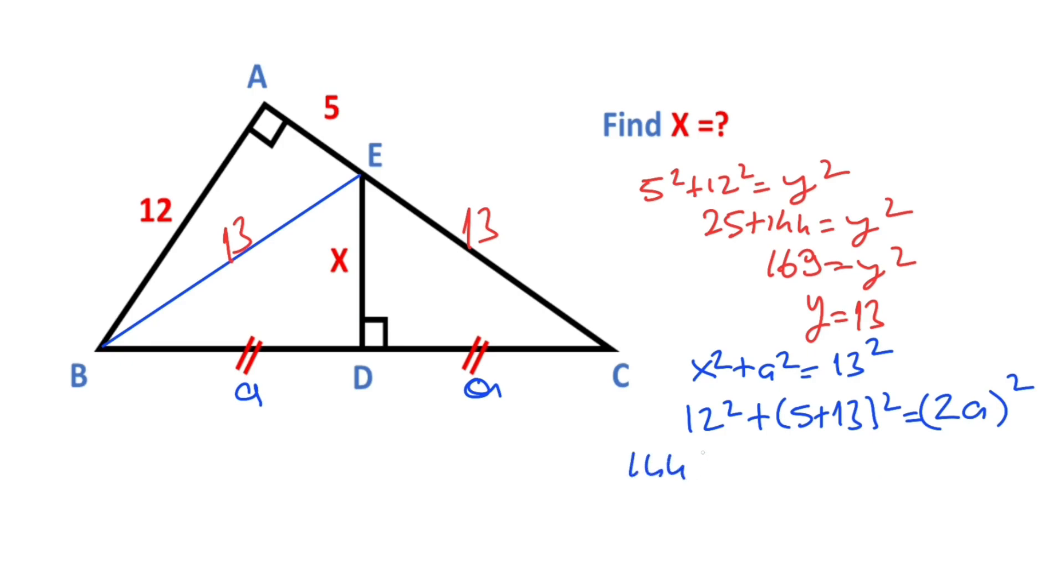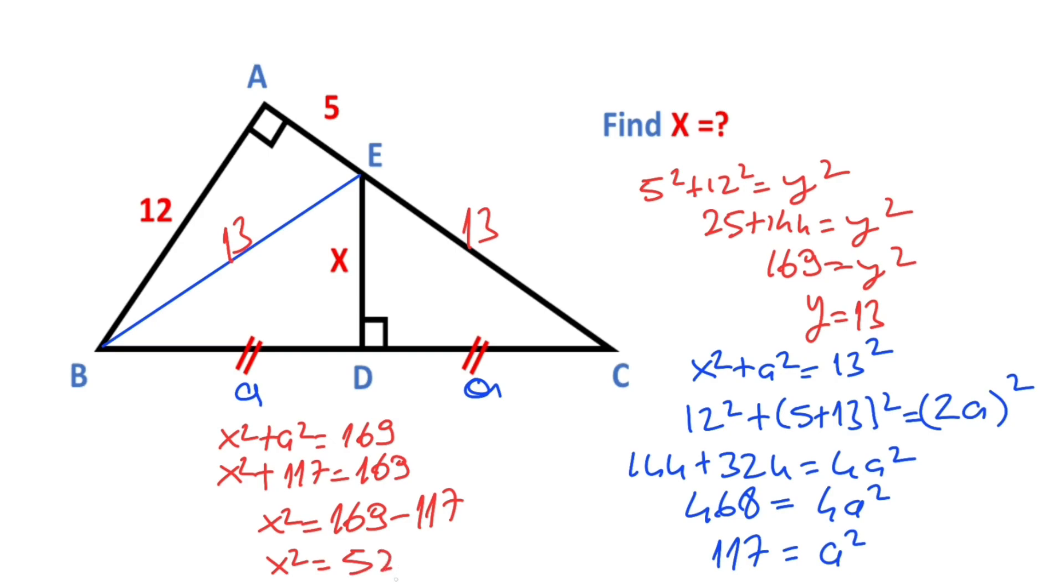So 144 plus 324 equals 4a squared. So 468 equals 4a squared. That means a squared equals 117. And then if you plug in this value to the equation, x squared plus 117 equals 169. Therefore x squared equals 169 minus 117. x squared equals 52. So x is going to be 2 root 13 units.